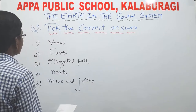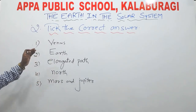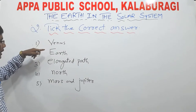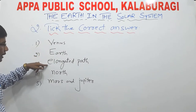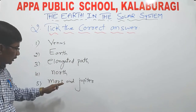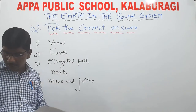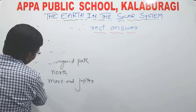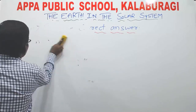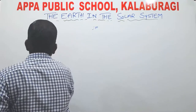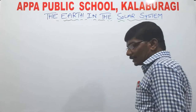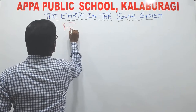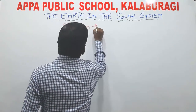These are the answers of the second bit — tick the correct answer. First answer is Venus, second is Earth, third is elongated path, fourth is north, and fifth is Mars and Jupiter. Understood children? We have discussed first bit and second bit. The last bit is fill in the blanks.